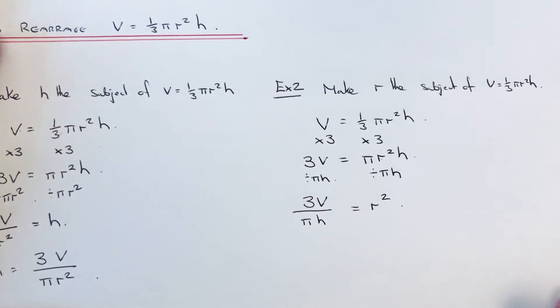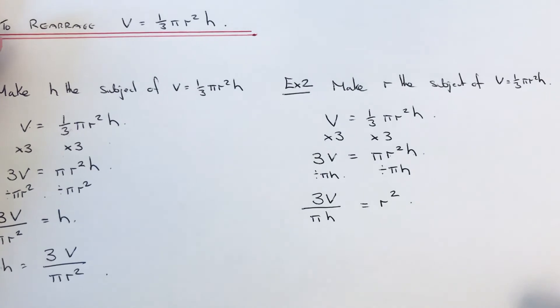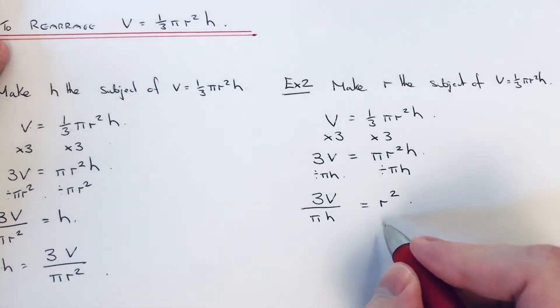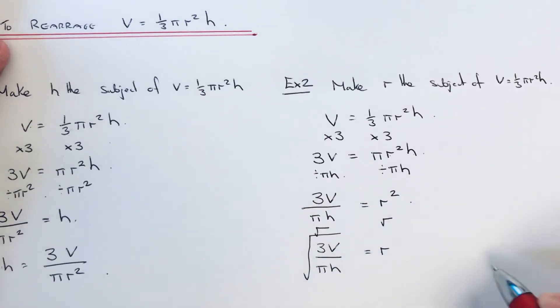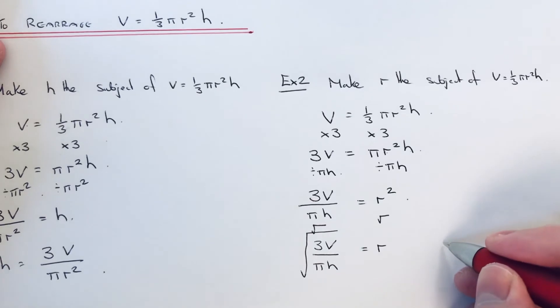There's one last inverse to do. That's the opposite to a square, which is a square root. So r will be equal to the square root of 3V over πh.